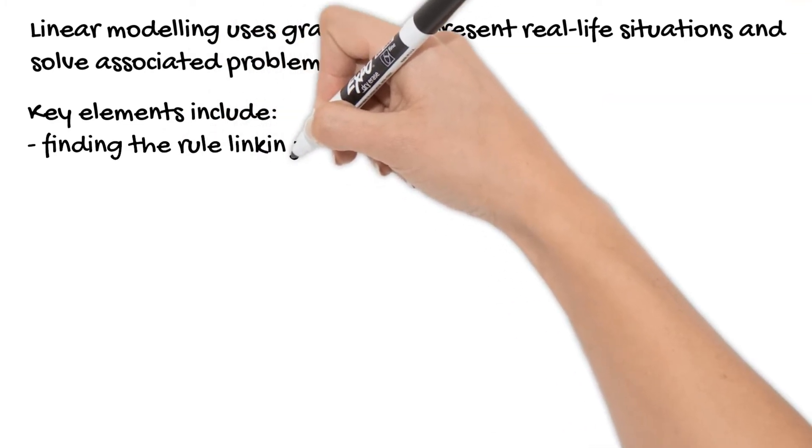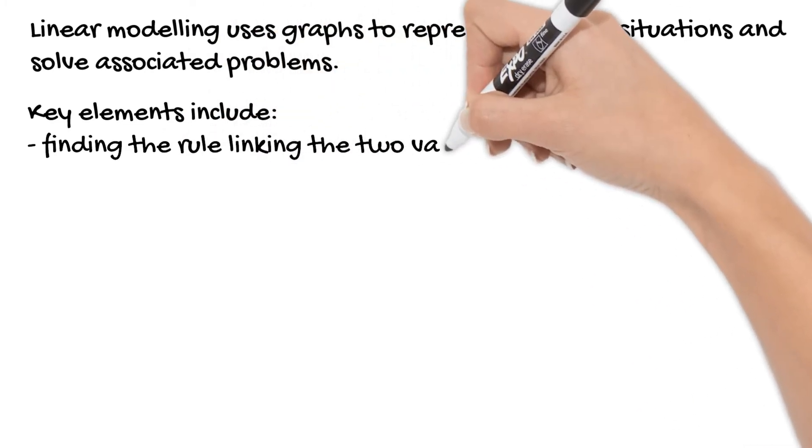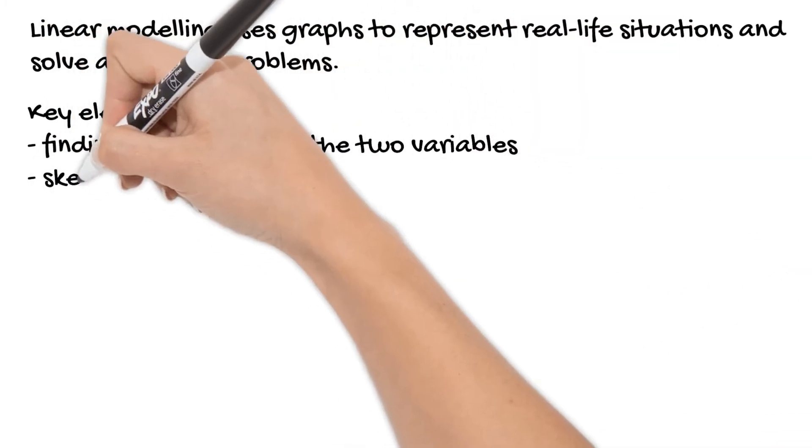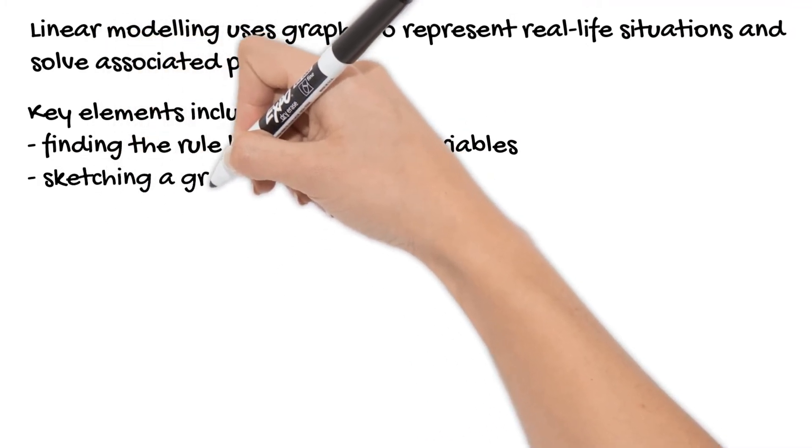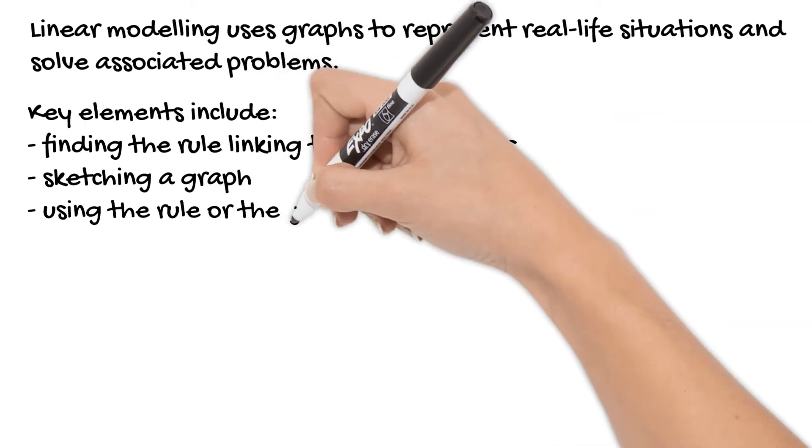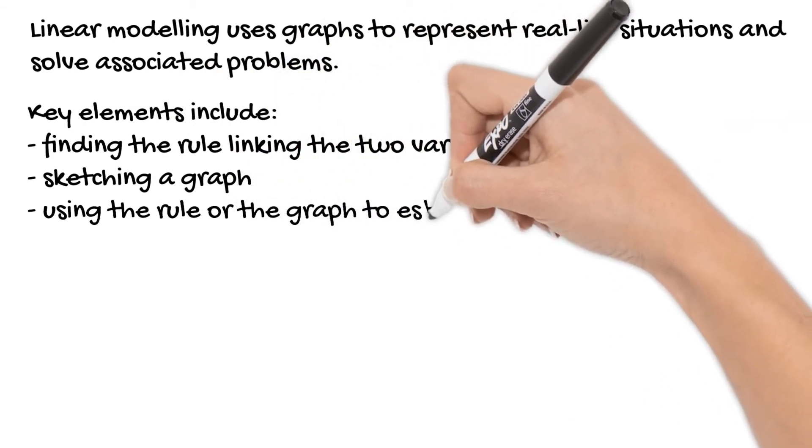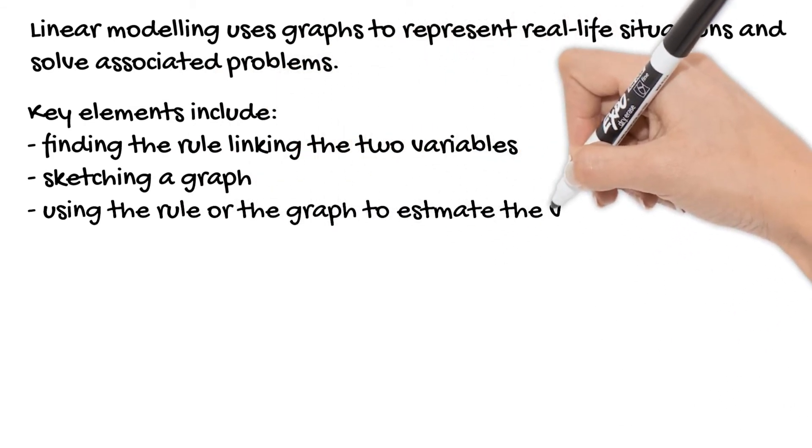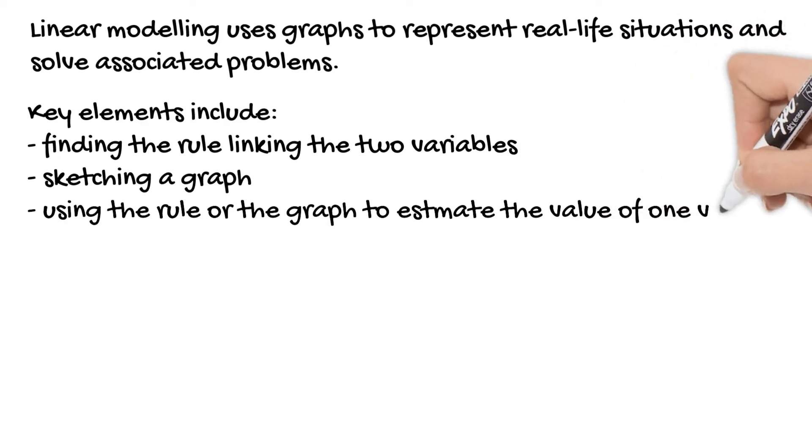To solve these problems, we first need to develop a rule that links the two variables we're working with. Then we need to sketch a graph, and once we've got a rule and a graph, we can use those to estimate the value of one variable when we're given another.